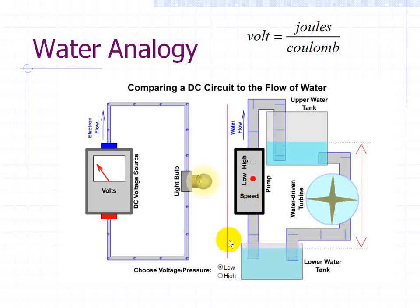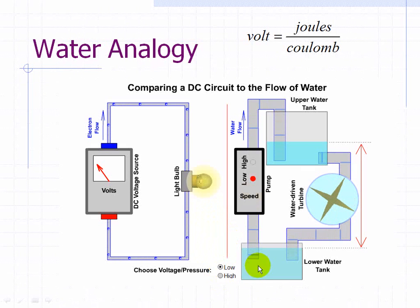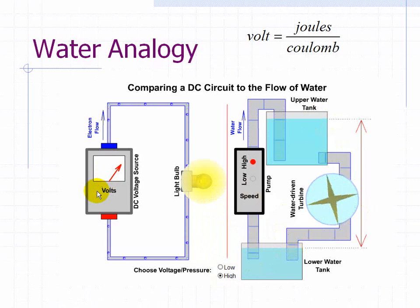Now when you have a greater water difference in the height, for example we go from here to here, we're increasing our pressure and therefore we're doing more work with this water driven turbine. Same thing with the DC voltage source.